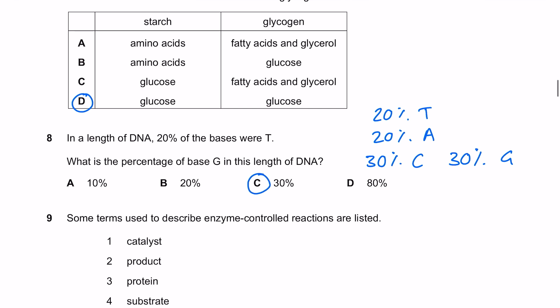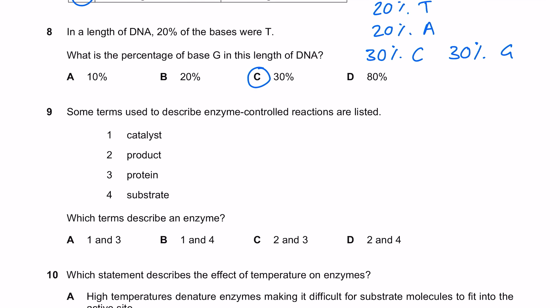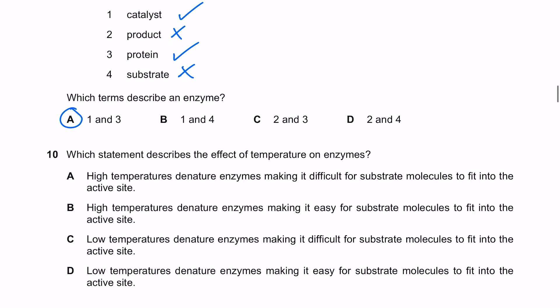Some terms are used to describe enzyme controlled reactions. Which terms describe an enzyme? It is a catalyst, it's not a product, it is a protein, it's not a substrate. It's one and three, answer A.